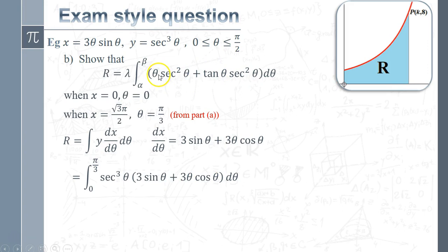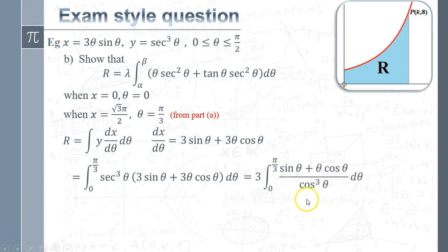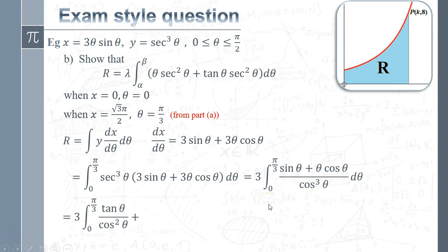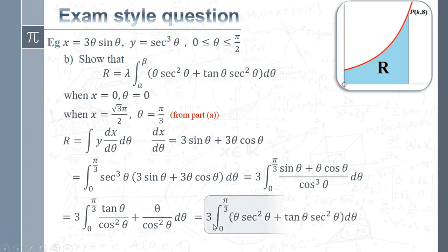Now we put y·(dx/dθ) together between the two limits. Since it's a 'show that' question, every step must be clearly shown. Writing sec³θ as 1/cos³θ, we take the factor of 3 out front as λ = 3. Looking at sinθ/cos³θ: sin/cos is tanθ, leaving 1/cos² = sec²θ, so that term is tanθ·sec²θ. For θcosθ/cos³θ, one cosθ cancels, giving θ/cos²θ = θ·sec²θ. So we've shown the integral equals 3∫[0 to π/3] (tanθ·sec²θ + θ·sec²θ) dθ, as required.